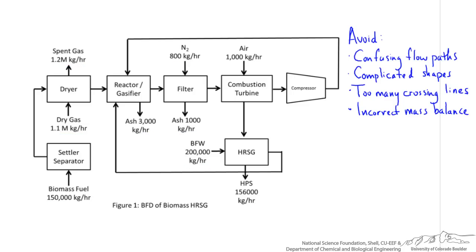Did you notice that no reaction was provided? Do you know why? It turns out that biomass is a complicated starting material that can be made up of hundreds of chemical and biological components. It would be impossible to show all of these reactions and their parallel and subsequent reactions in this diagram, so it's okay that they did not include this — it would have been very cumbersome and far too much detail.